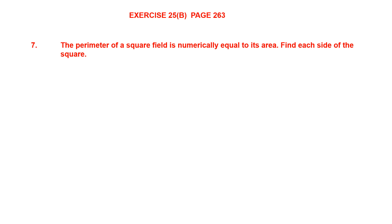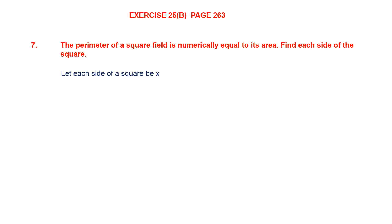The perimeter of a square field is numerically equal to its area. So, perimeter is equal to its area. Find each side of the square. Let each side of the square be x — we have to find that. We are going to consider the side of the square to be x.